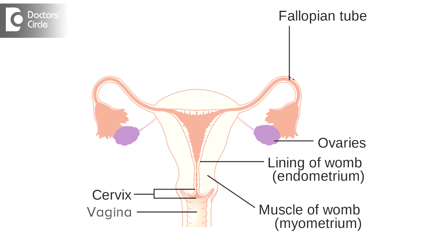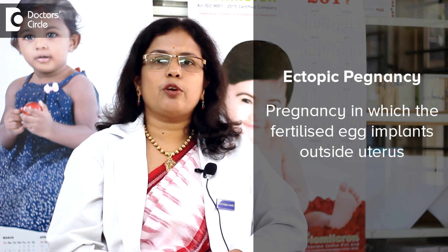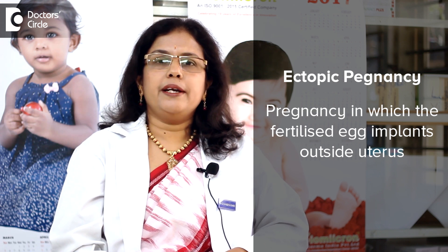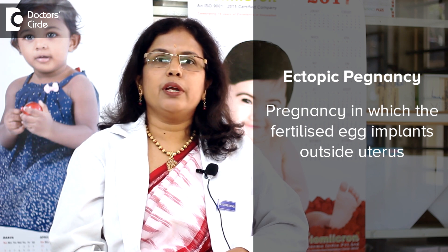Coming to the infection of the cervix — cervicitis is the inflammation of the cervix, which is the lower end or the mouth of the uterus. Next is pelvic inflammatory disease, which is the infection or inflammation of the uterus, tubes, and the adnexia. Antibiotics are usually given to treat the woman and her partner. There is an increased risk of ectopic pregnancy in PID due to tubal adhesions and scarring, and pain during intercourse.